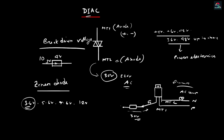Now we are going to talk about some theoretical logic — specifically model numbers. The correct model numbers are DB3, DB4, DB3A, and DB6. We are going to talk about these model numbers available in the market. We will give you some examples and talk about the datasheet — we will collect the datasheet.